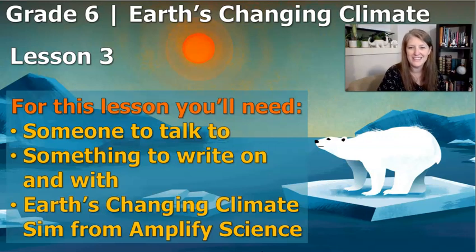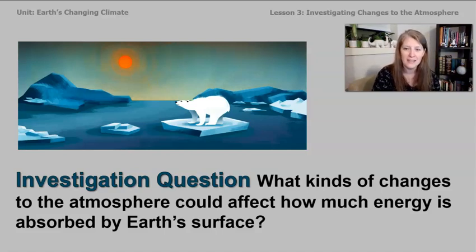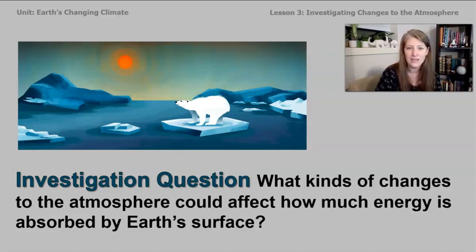All right, let's start this lesson. One possible cause of the current climate change that's happening on our planet right now could be a change in the atmosphere of our planet. We're going to investigate on the sim today. We're going to try a bunch of different gases that are in Earth's atmosphere and see if we can use that information to answer this investigation question: what kinds of changes to the atmosphere could affect how much energy is absorbed by Earth's surface?